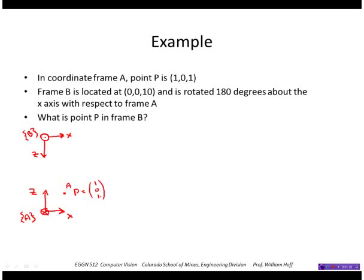Okay. So we want to find point P in frame B. So we're going to need the transformation matrix from A to B, so that we can get point P in the B frame by multiplying H from A to B times P_A.